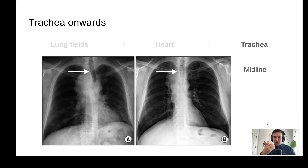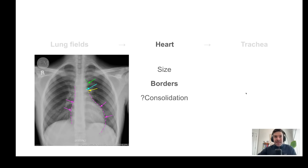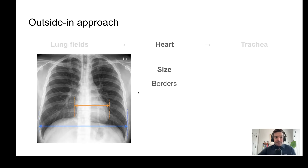Next I find the trachea and work outwards. Here we see the trachea is midline because we can see the spinous processes behind it. Here you can see the trachea is clearly deviated. Following the trachea down you naturally get to the borders of the heart. Cardiomegaly is when the maximum diameter of the heart is at least 50% of the larger blue line — and here the orange line is going to be less than 50% of the blue line, so probably no cardiomegaly.